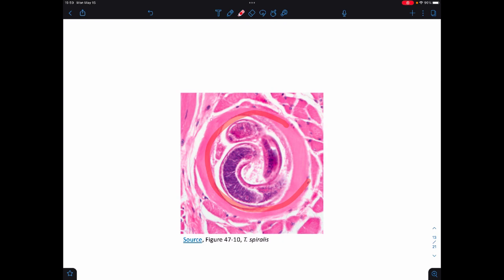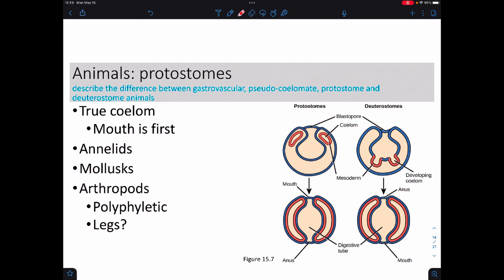This here is Trichinella spiralis. This is the reason why you have to cook your pork. So, amongst the eucoelomates, meaning true coeloms, or the true body cavities, the first group is what we call protostomes.